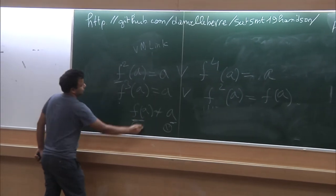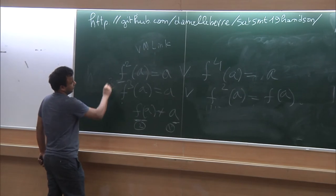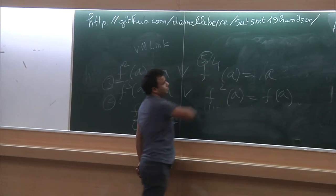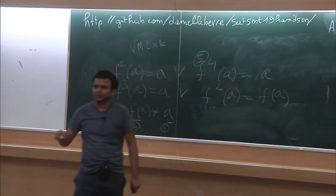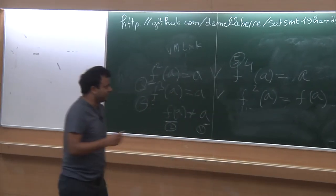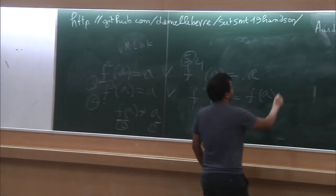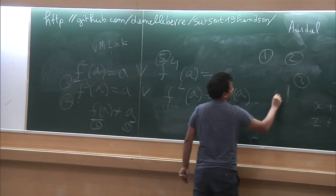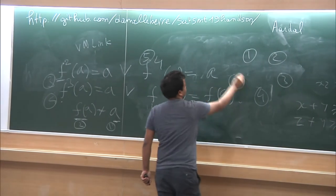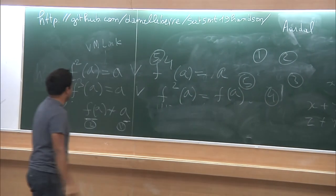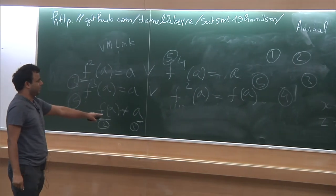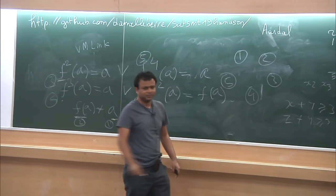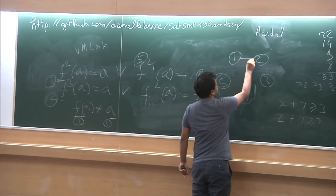It knows that f of a is not equal to a. Suppose the solver decides f squared of a equals a — so term 3 equals term 1. If terms 1 and 3 are equal, and you apply the function f to both sides — because f is a function, equal inputs must give equal outputs — then f of them must also become equal. That is the congruence axiom Z3 uses.